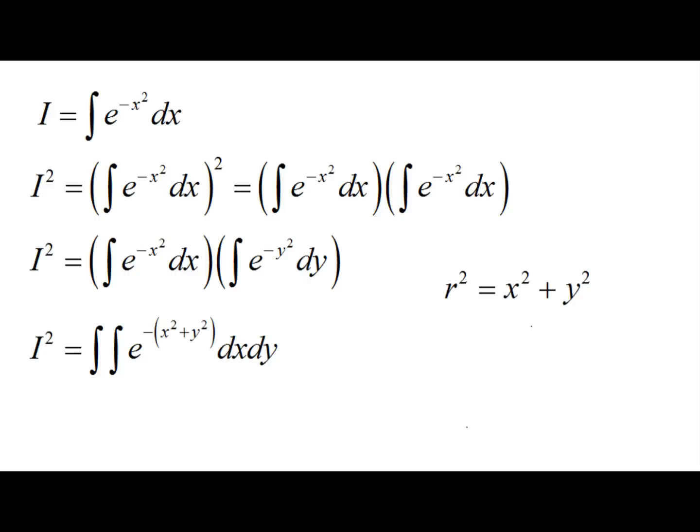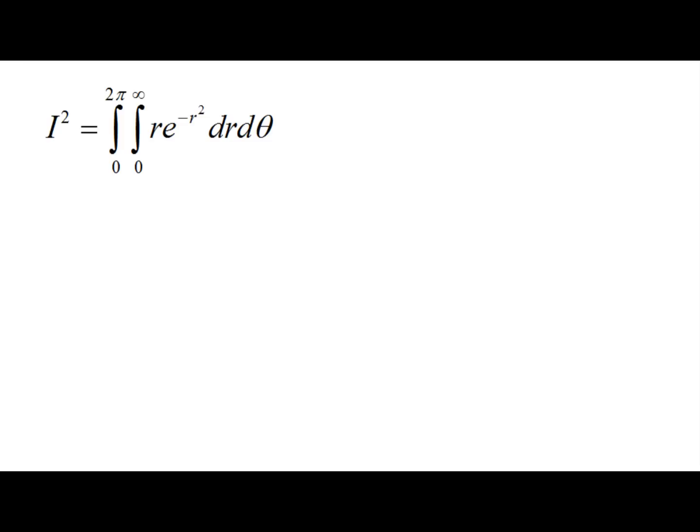The next step is to change coordinate systems to the polar coordinate system. Don't forget about the Jacobian correction factor in your integral. So now we plug everything into our integral and integrate using u substitution.